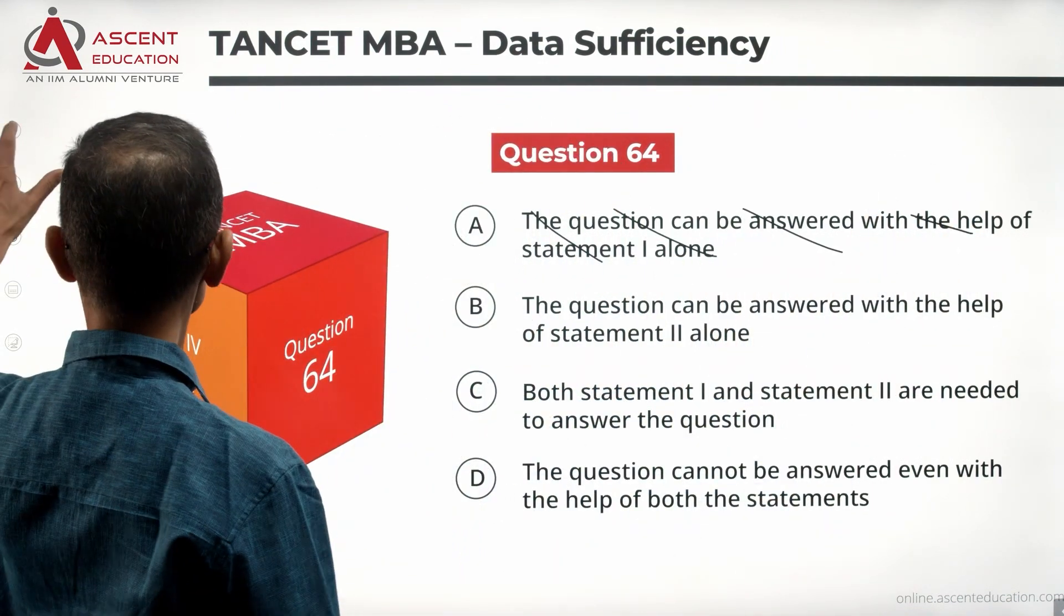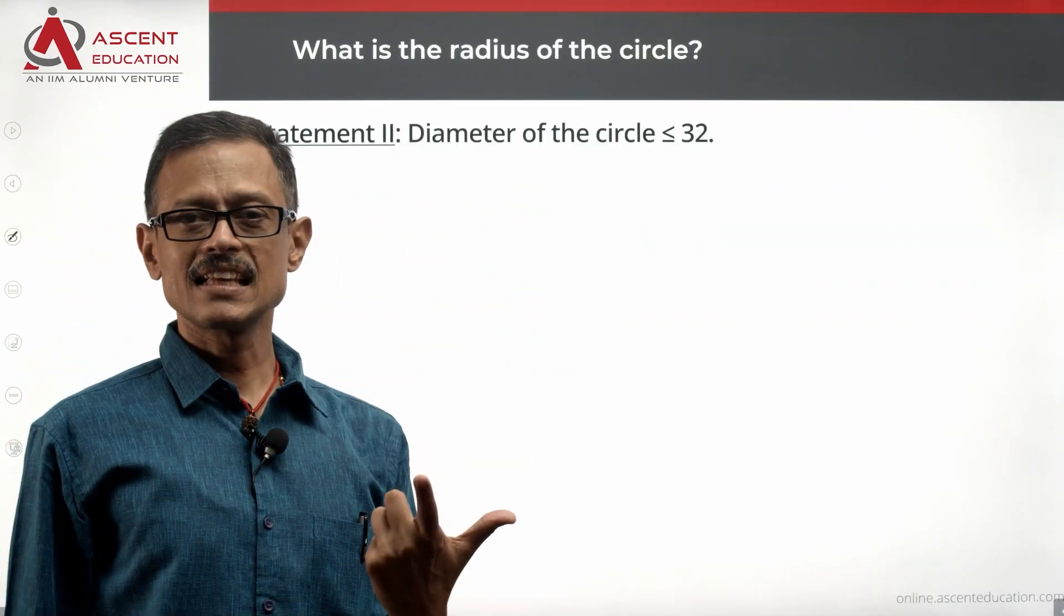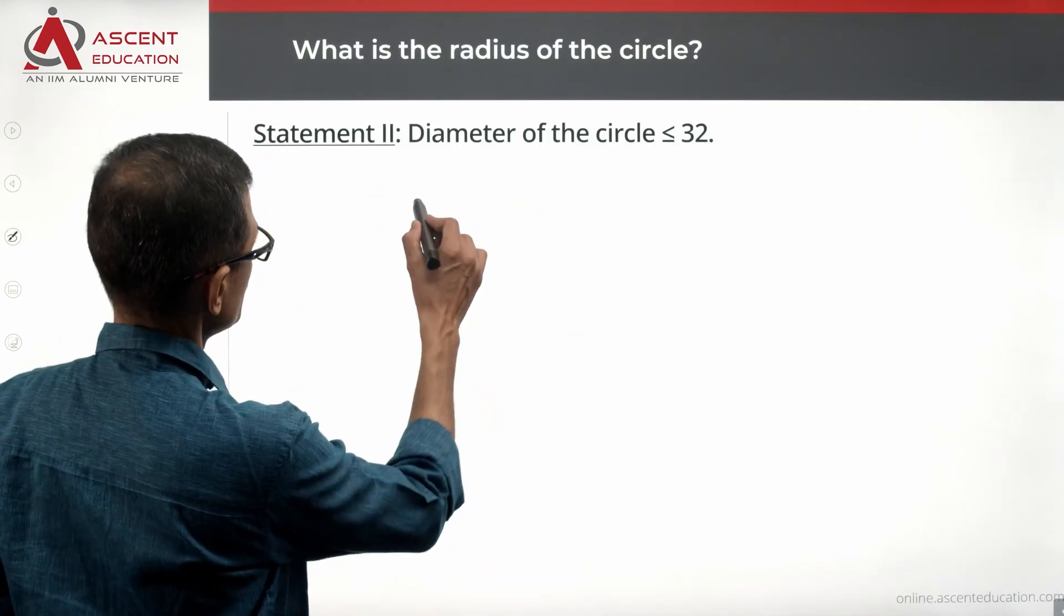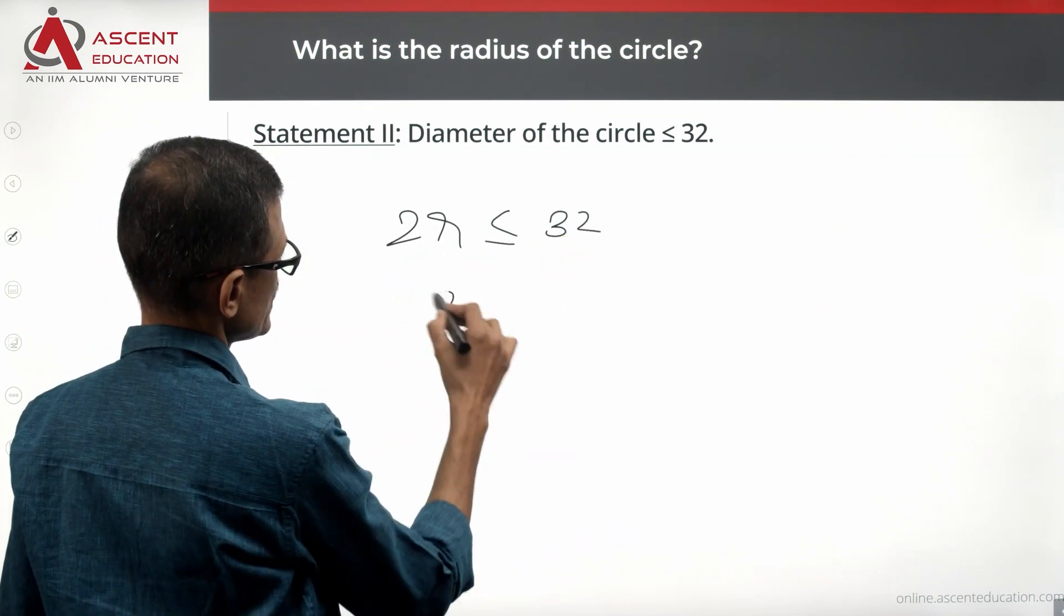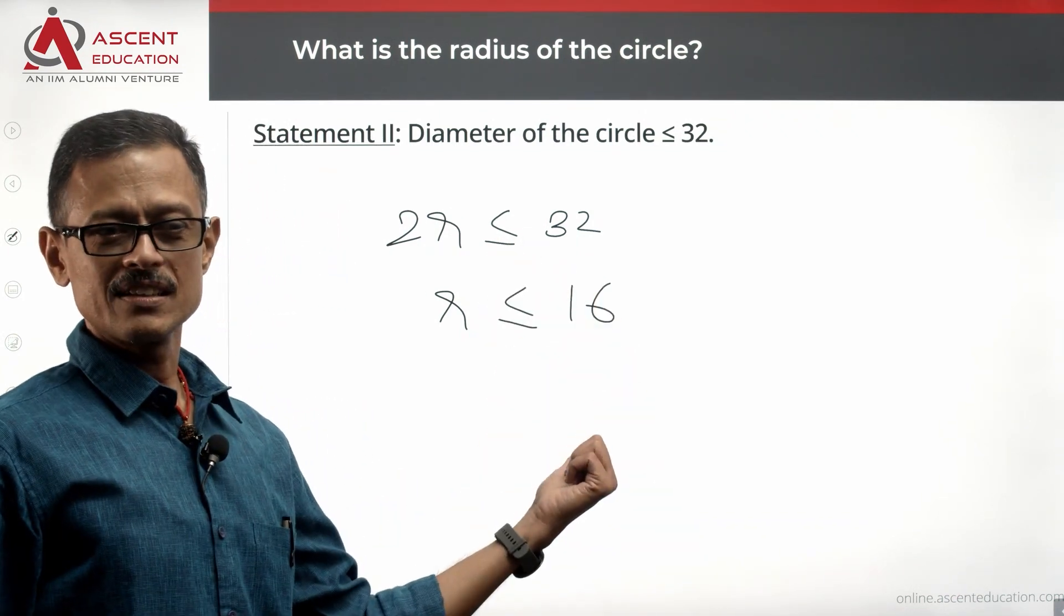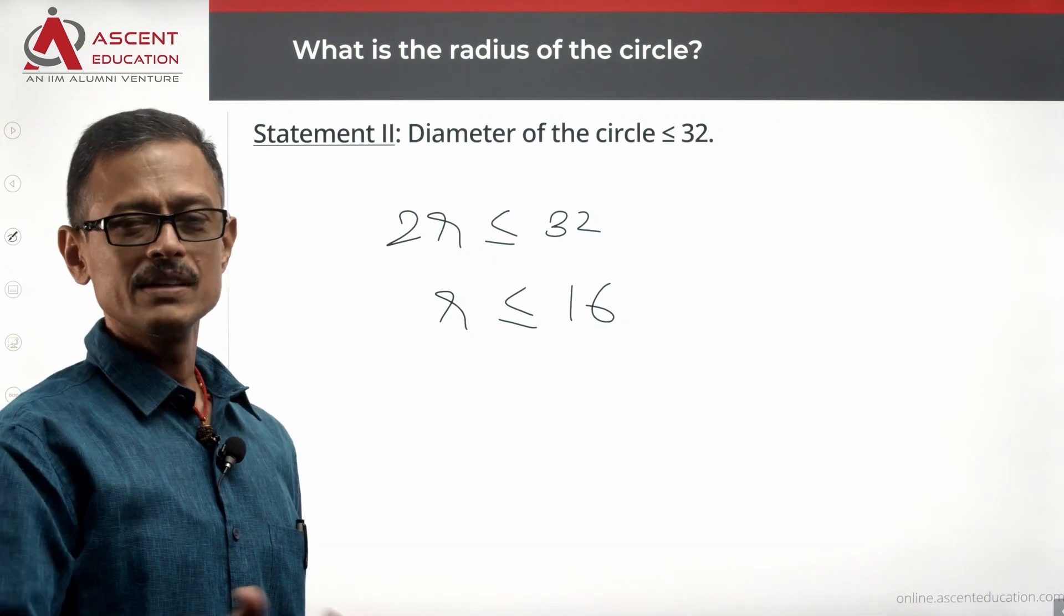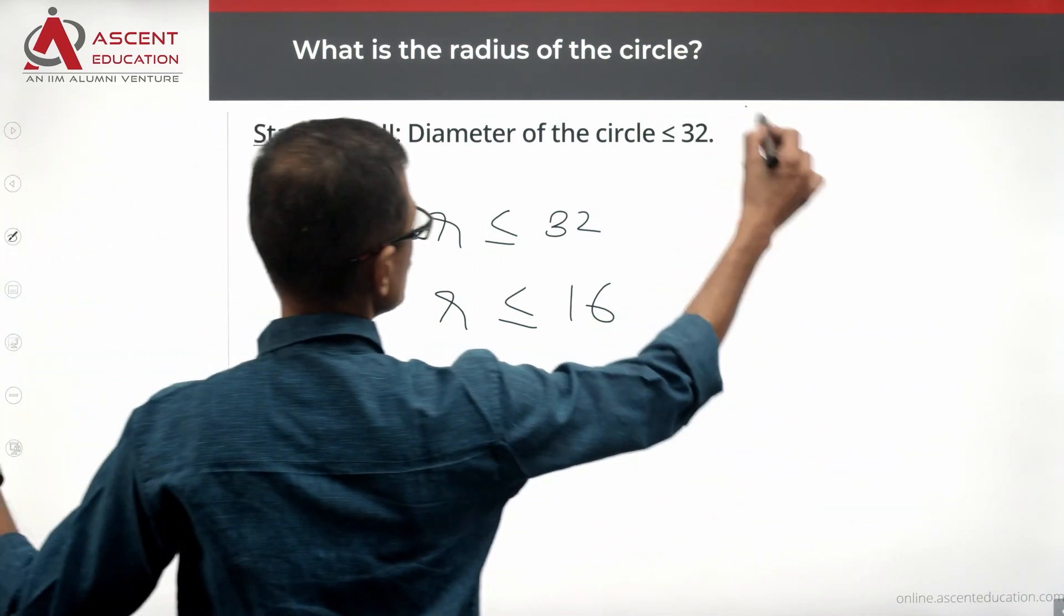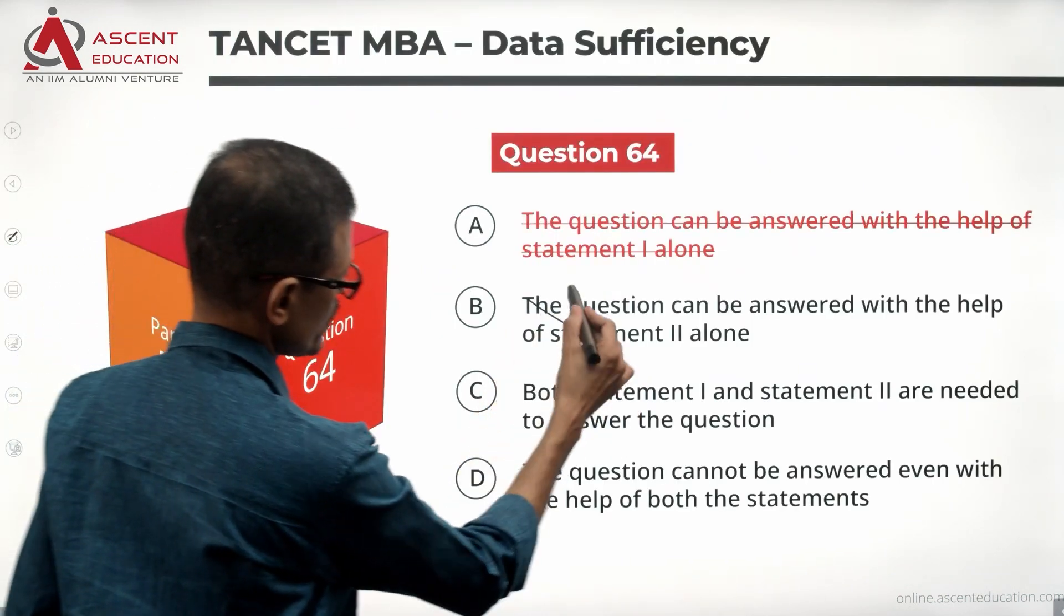Take a look at statement two. Let's see whether that is helping us. Statement two is telling the diameter of the circle is less than or equal to 32. So diameter equals 2 times the radius, which is less than or equal to 32, which means R is less than or equal to 16. So R could be 16, R could be 15.9, R could be 15, R could be 2, infinite possibilities. Statement two alone is not sufficient. Let's rule out this option.